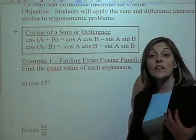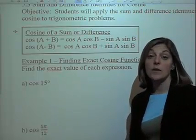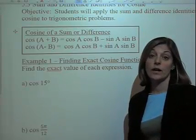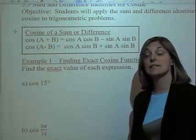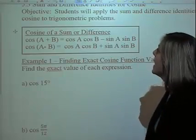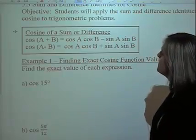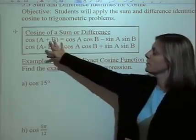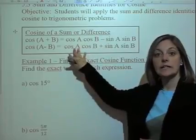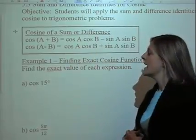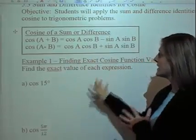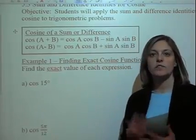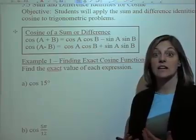We're going to look at the sum and difference for cosine identity. You have your formulas here, and we're going to take a look at some problems involving the exact value.